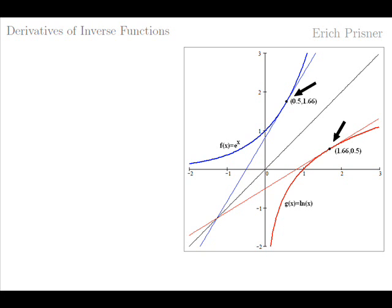Next, we choose an arbitrary point on the graph of the function f, for instance 0.5, 1.66. The tangent line to f at this point is a thin blue straight line. Its slope is equal to f prime of 0.5, about 1.66. Now look at the blue graph of f, the point 0.5, 1.66, and the blue tangent to f at this point. All this is reflected about the diagonal y equals x. We get the red graph, a point, and the red tangent to the graph at that point. The reflected graph is that of g and the reflected point is 1.66, 0.5. So the reflections of the tangent lines of f are the tangent lines of g, but at different points, at different x values.